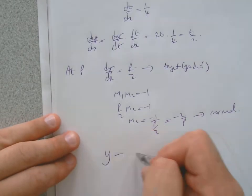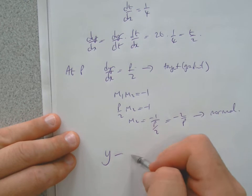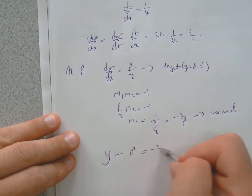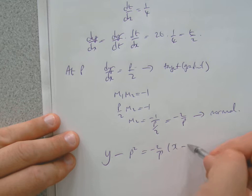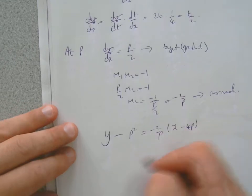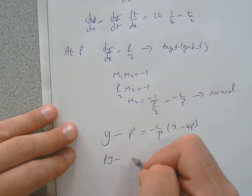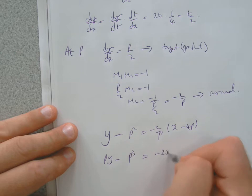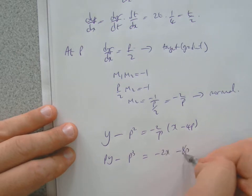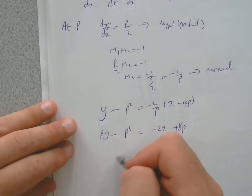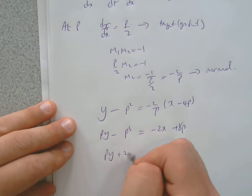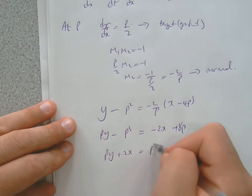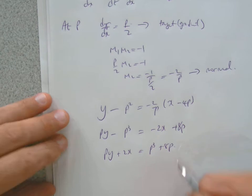So you'll have Y minus Y1, which would be little p squared, equals minus 2 over p, X minus 4p. So p Y minus p cubed equals minus 2X plus 8p, and then you get p Y plus 2X equals p cubed plus 8p, exactly what they're asking for.